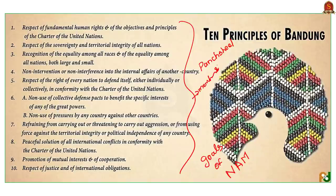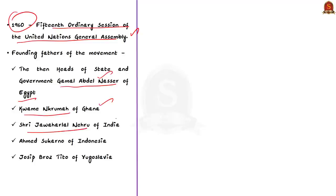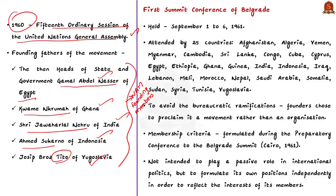In 1960, the foundation of the movement of non-aligned countries was given a major push during the 15th ordinary session of the United Nations General Assembly. A key role was played by heads of state including Gamal Abdel Nasser of Egypt, Kwame Nkrumah of Ghana, Jawaharlal Nehru of India, Ahmed Sukarno of Indonesia, and Tito of Yugoslavia, who later became the founding members of the movement. Six years after the Bandung Conference, the movement of non-aligned countries was formed on a wider geographical basis at the first summit conference of Belgrade.